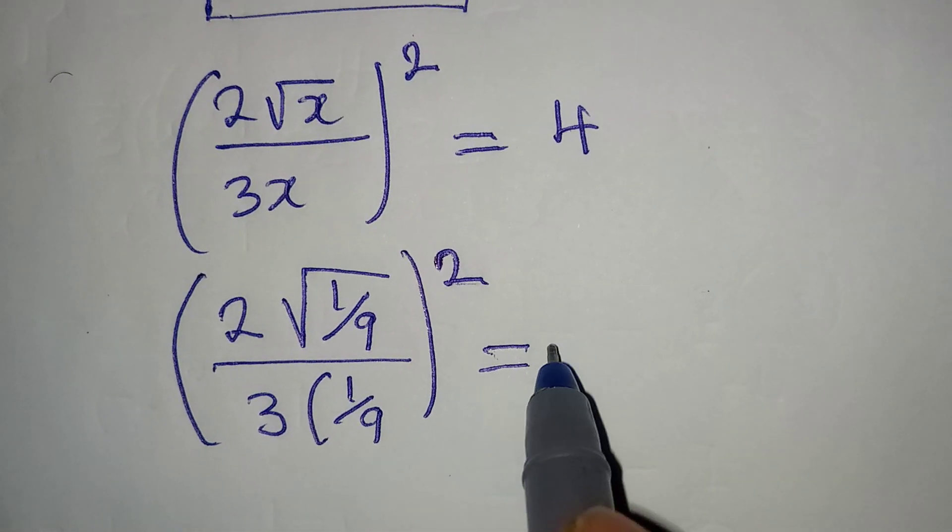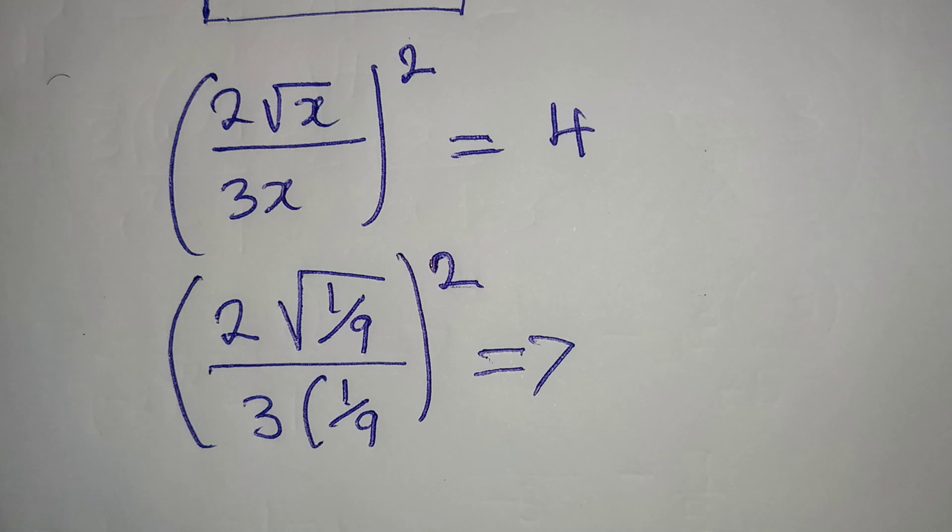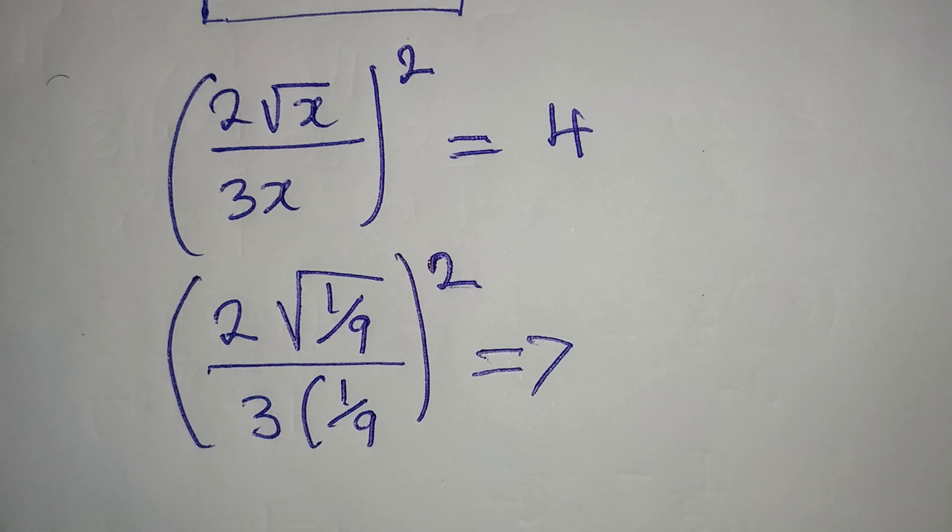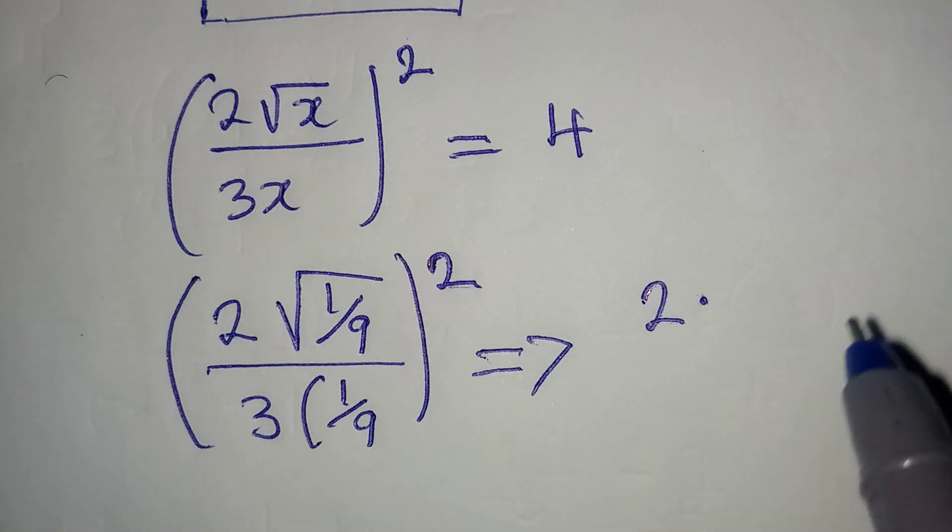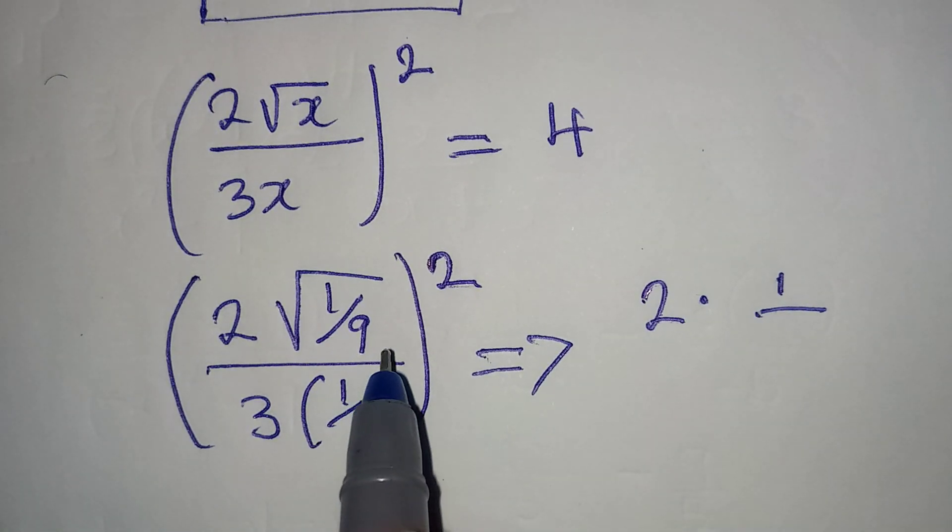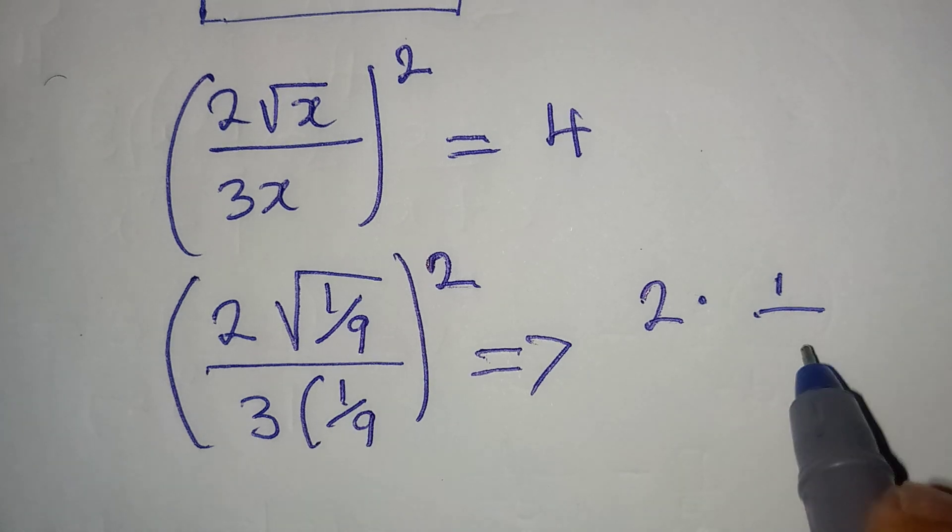Now will this give us 4 as the answer? Let's continue. This is 2 multiplied by √1 is 1, and √9 is 3.